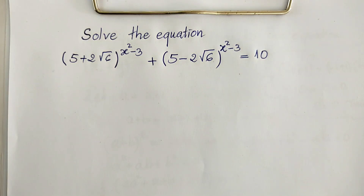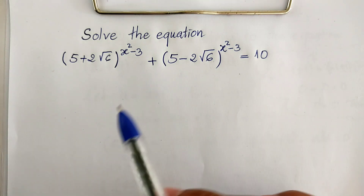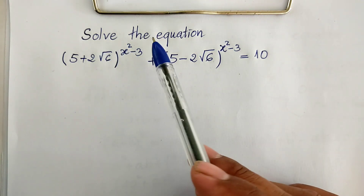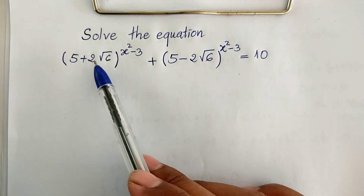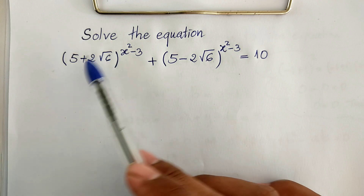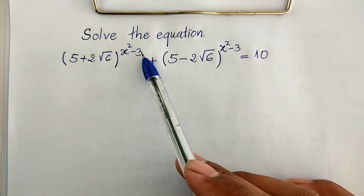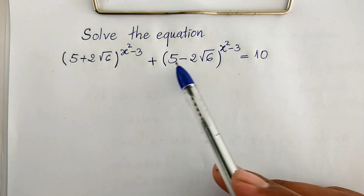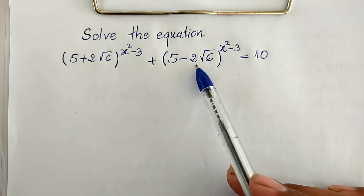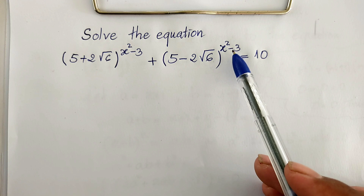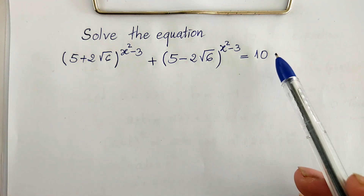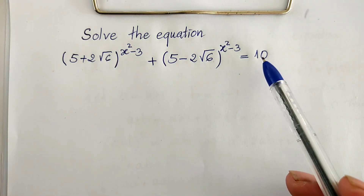Hello everyone, welcome to my YouTube channel. Today I have one exercise like on paper. The equation is (5 + 2√6)^(x² - 3) + (5 - 2√6)^(x² - 3) = 10.